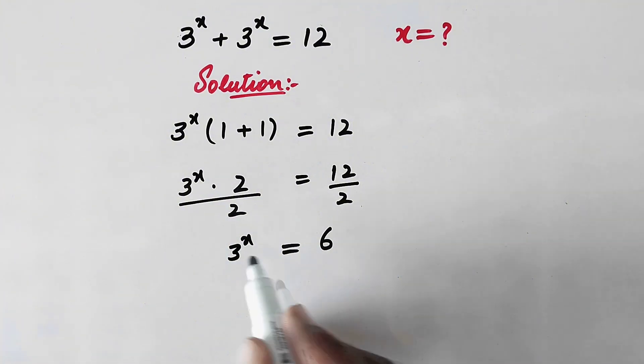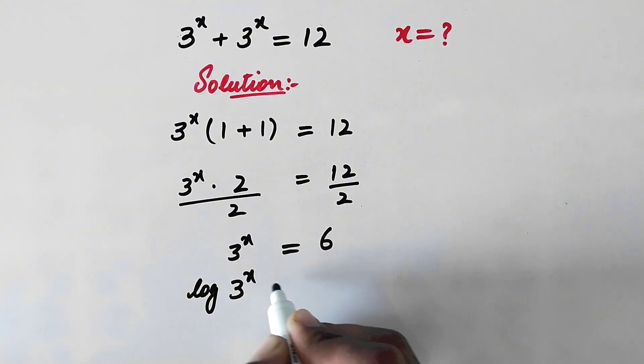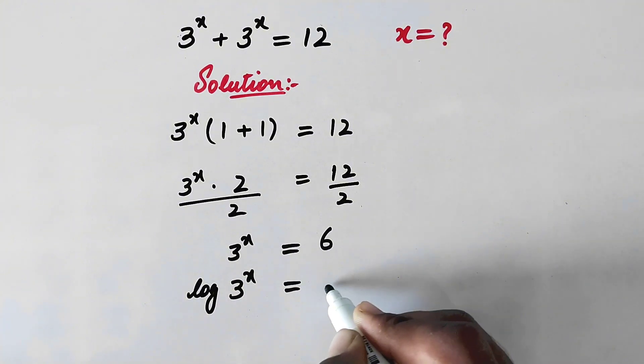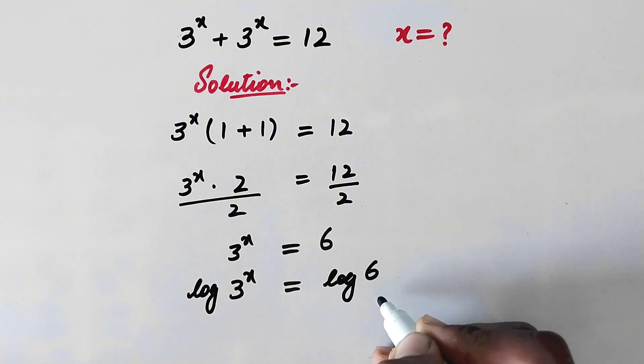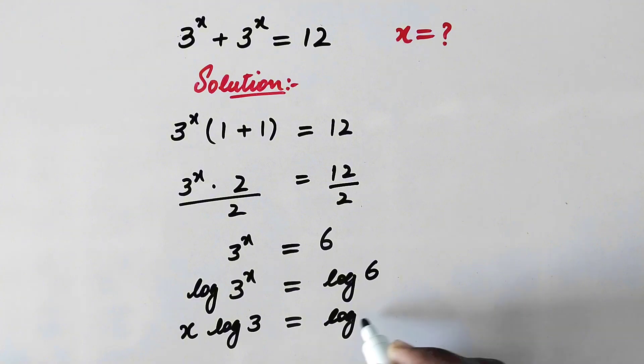And now what will we do next? We will take common log on both sides. So here will be log of 3 to power x equals log of 6. And as this is a property of log, this power will be before log. So here will be x times log of 3 equals log of 6.